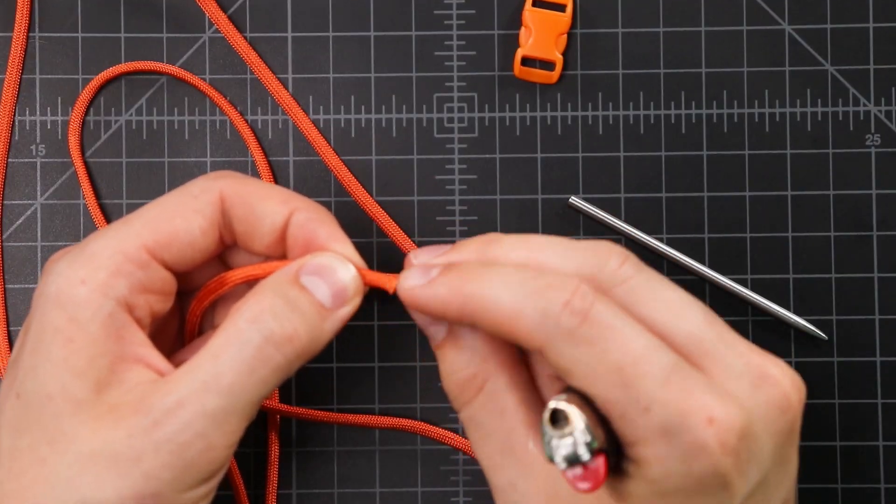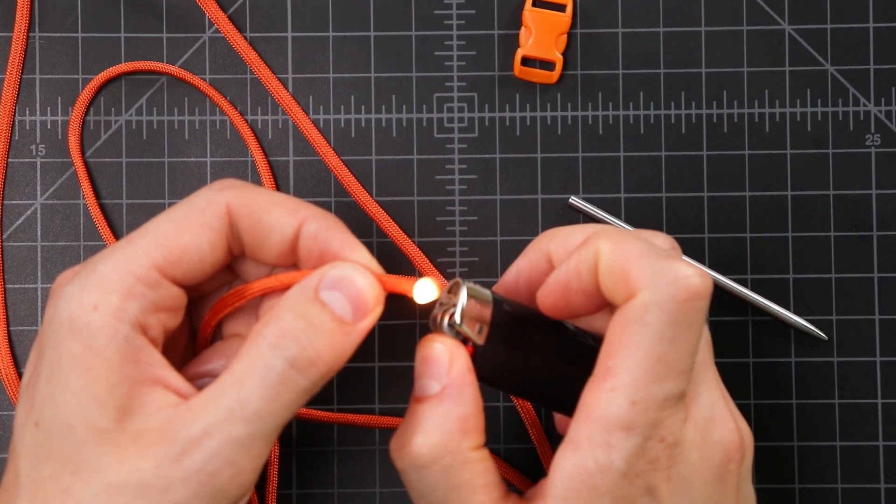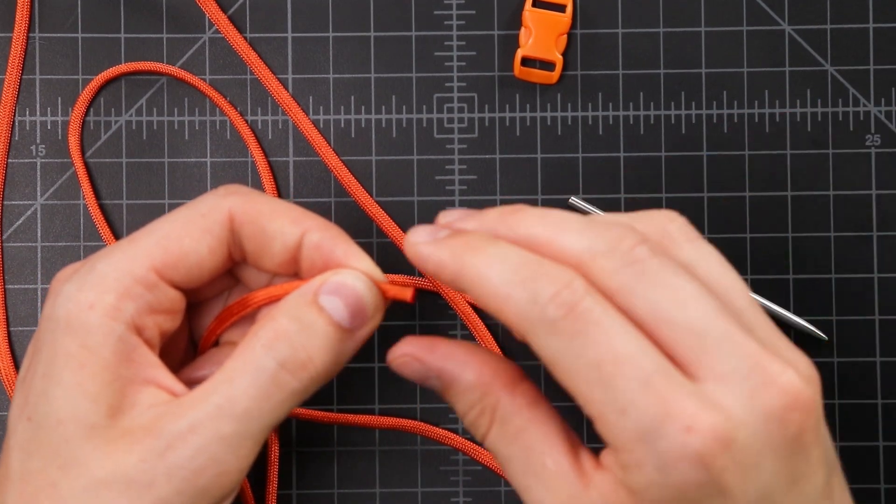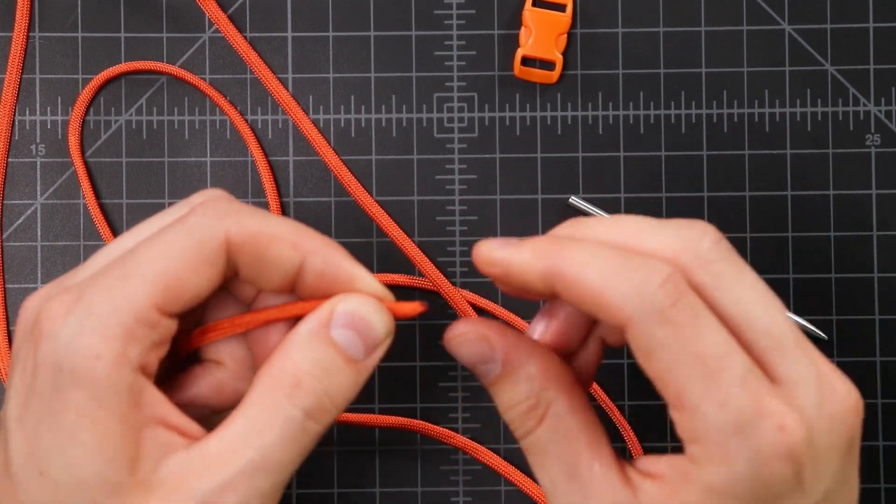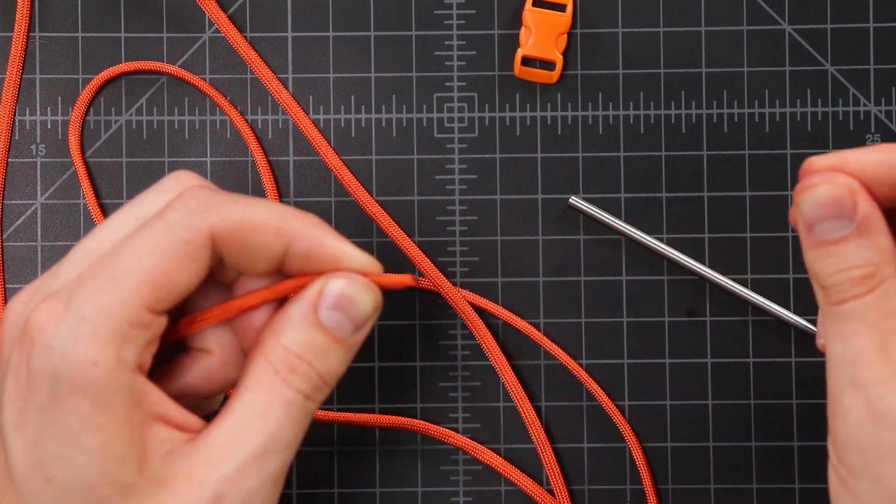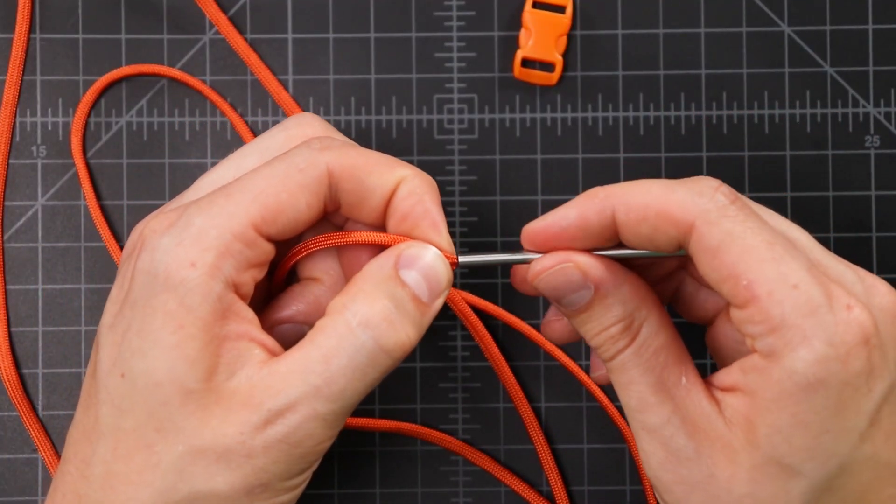Kind of brush it to a point before melting it, and then either using a pliers or your fingers, just melt that down to a point. So that should be good enough. Now we'll thread our FID on.